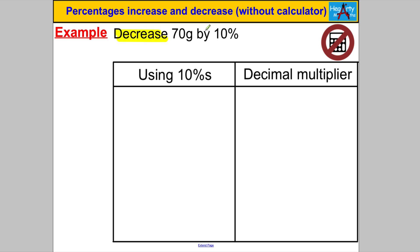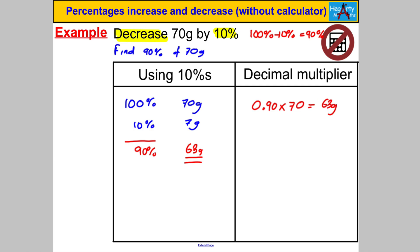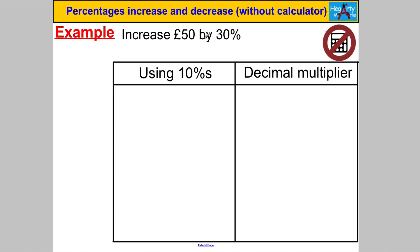Next: decrease 70 grams by 10%. Before you did anything you had 100%. You're decreasing by 10%, so you're left with 90%. The equivalent question is: find 90% of 70 grams. 100% = 70g, 10% = 7g, so 90% = 70g − 7g = 63g. Using the decimal multiplier: 0.90 × 70 = 63g.